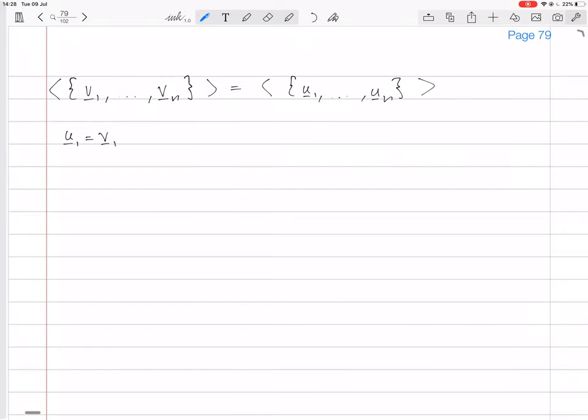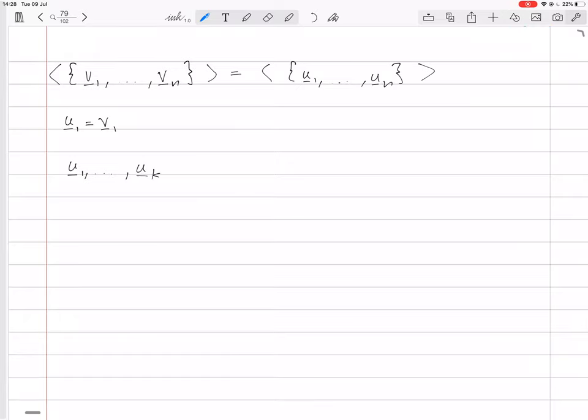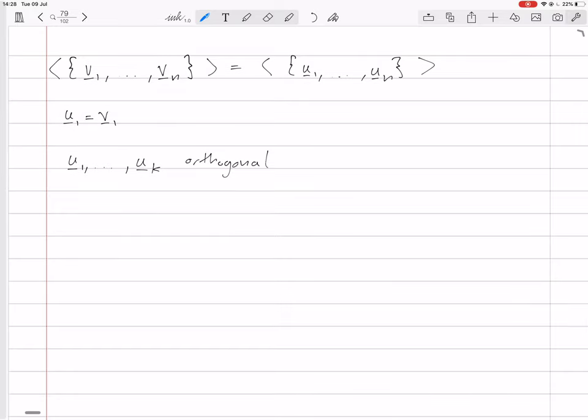Now, instead of saying how I'm going to calculate u2, so calculating u2 would actually be the same as the procedure for two vectors, I'm going to say how, if we had u1 to uk, how would I calculate uk plus 1? So imagine we have u1 to uk, which are all orthogonal to each other. So we have this, assume we have those that are all orthogonal.